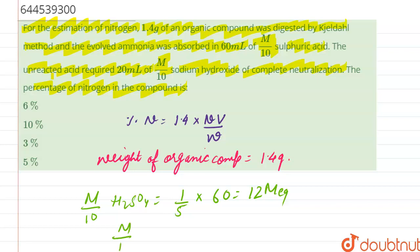So M by 10 of NaOH will also be 1 by 10 into 20, where we are actually just doing nothing but we are having 20 ml over here and we have M by 10 sodium hydroxide.